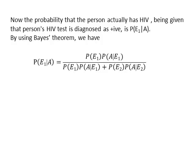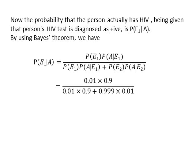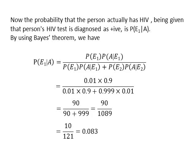Now, the probability that the person actually has HIV, given that the HIV test is diagnosed as positive, is P(E1|A). By using Bayes' theorem, P(E1|A) equals PE1 multiplied by P(A|E1) divided by PE1 multiplied by P(A|E1) plus PE2 multiplied by P(A|E2). Substituting the values and simplifying, we get P(E1|A) equals 10/121.